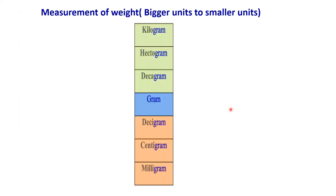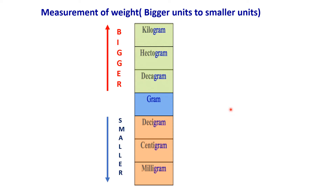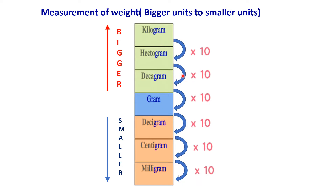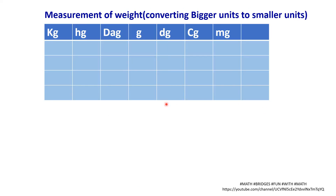For conversion from bigger units to smaller units in measurement of weight: kilogram, hectogram, and decagram are the bigger units, whereas decigram, centigram, and milligram are the smaller units, and gram is the basic unit. From kilogram to hectogram or hectogram to decagram, we use multiples of 10. You can draw a tabular column or just write the mnemonic abbreviations — kg, hg, dag — as per your convenience.